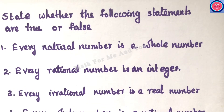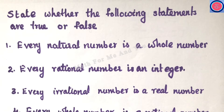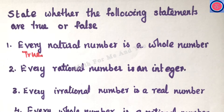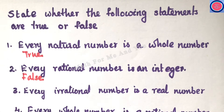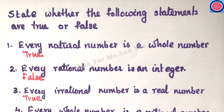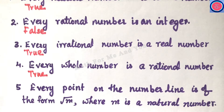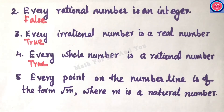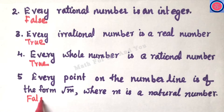Q1: Every natural number is a whole number — true, because the natural number set is smaller than the whole number set. Q2: Every rational number is an integer — false, because rational numbers form a larger set containing integers. Q3: Every rational number is a real number — true. Q4: Every whole number is a rational number — true, as whole numbers are inside the rational number set. Q5: Every point on the number line is of the form √m where m is a natural number — false, because there are negative numbers on the number line which cannot be written in that form.